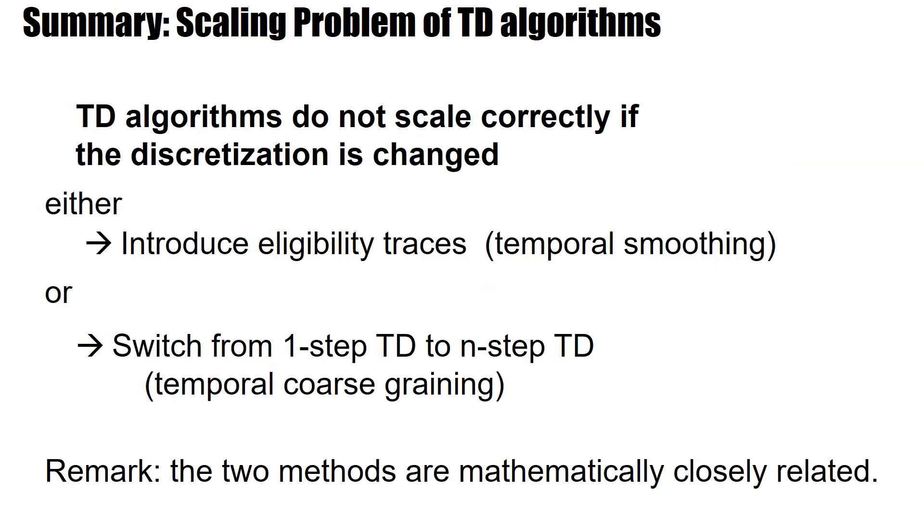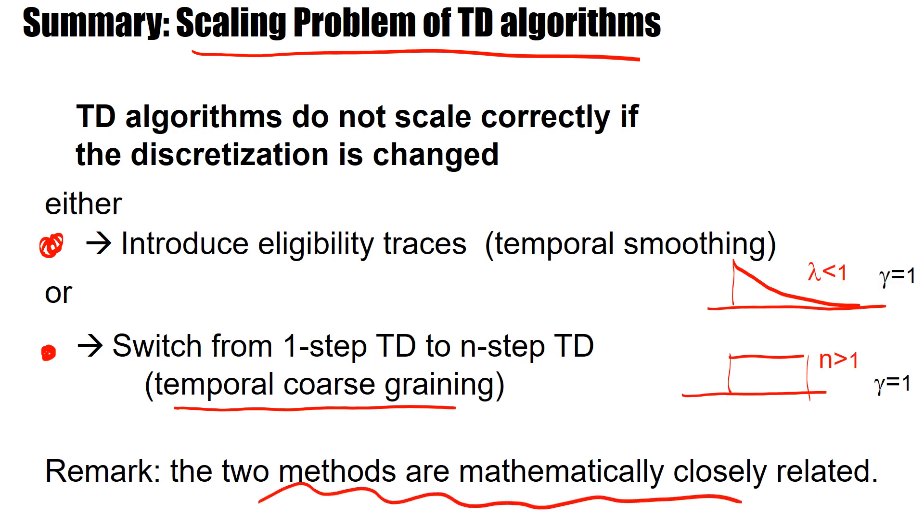To summarize, we have a scaling problem of TD algorithms. If I change the discretization, things change. And to compensate for that, I can either introduce eligibility traces, that sort of amounts to a temporal smoothing with an exponentially decaying temporal filter, or I can use a switch from one-step TD to n-step TD. And that corresponds to temporal screening. So here, the temporal for eligibility traces, the temporal smoothing window is exponential. And for n-step TD, it would just be a rectangular window. And if you do this comparison, you can understand that the two methods are mathematically closely related, just slightly different filters.